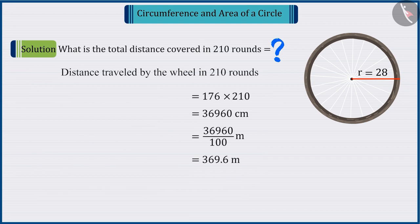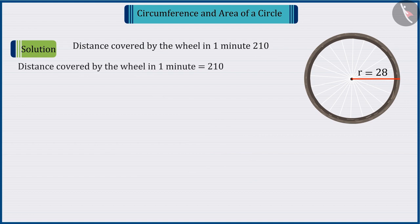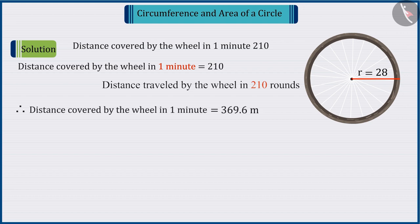Since we are given that wheels rotate 210 in a minute, therefore, the distance travelled by the wheel in one minute is equal to the distance travelled in 210 rounds. So, now, can you find the speed per hour of Raj?